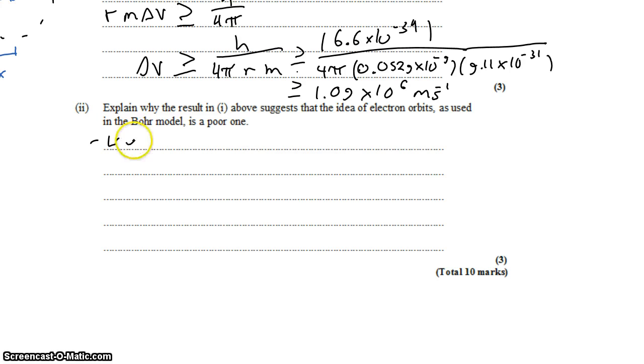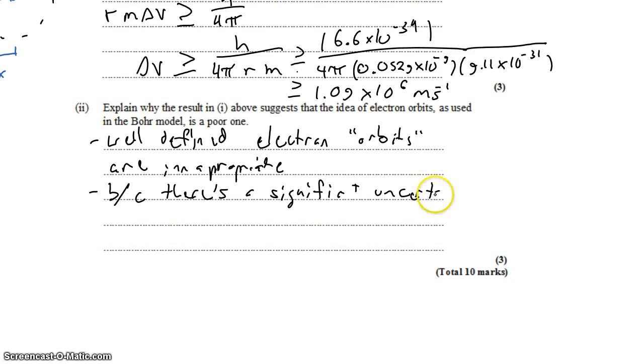The issue here is that well-defined electron orbits are inappropriate. Because there's a significant uncertainty to the position and speed of electrons that can't be made more precise.